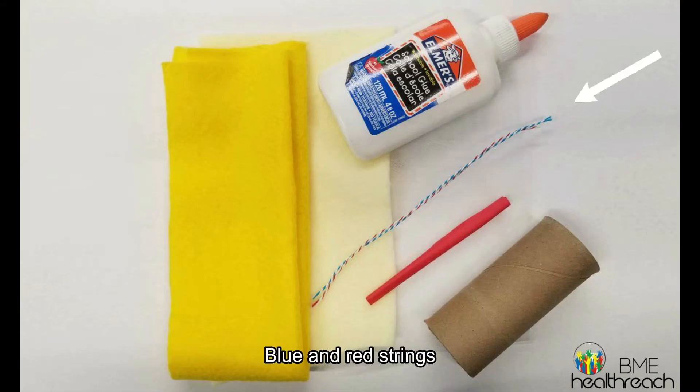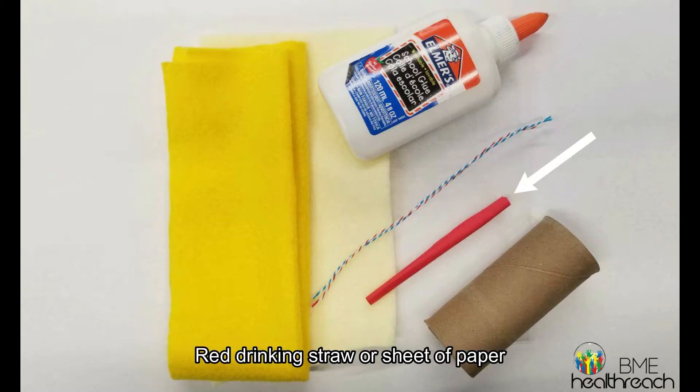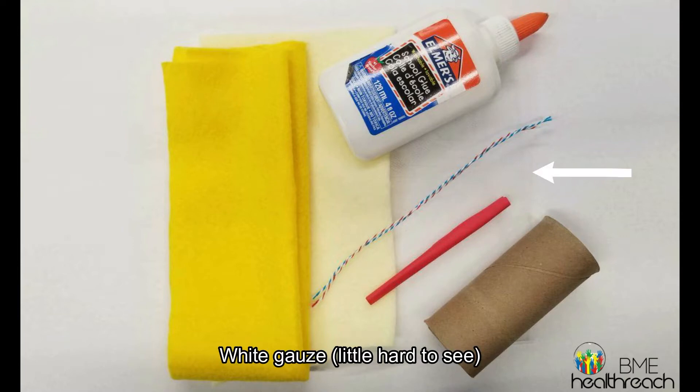For this activity you will need a blue and red string, red drinking straw or paper, yellow felt, beige felt, white gauze, cardboard tubing, and tape or glue.